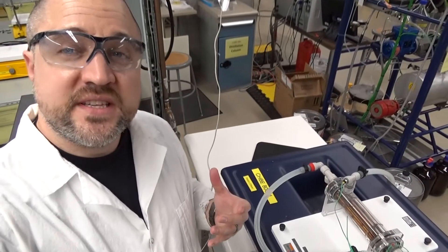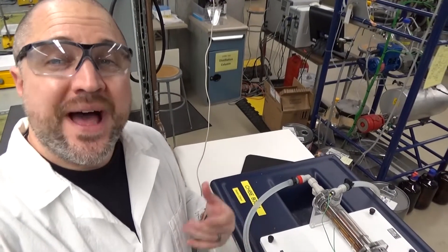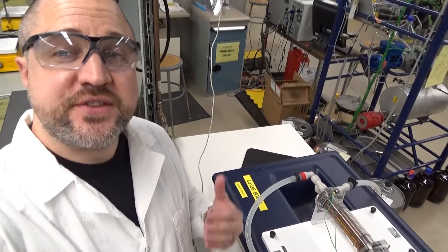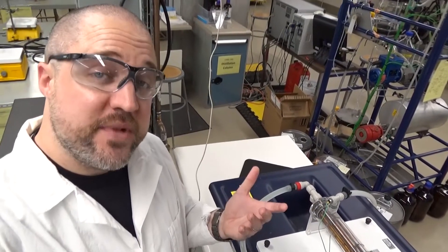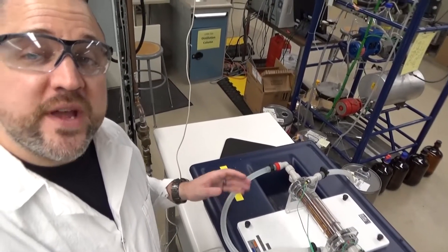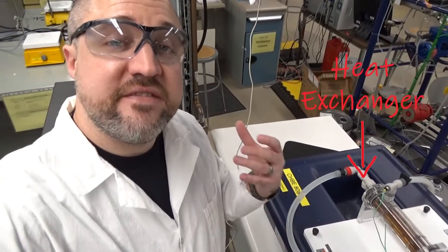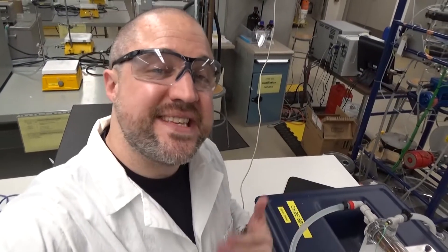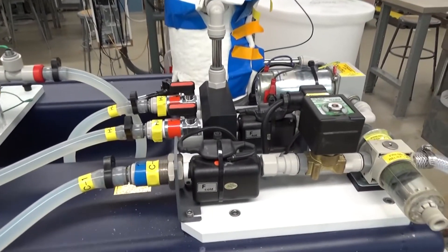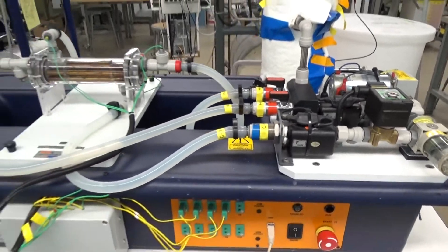We don't only study how matter behaves but also how energy behaves. Knowing how energy behaves allows us to design systems that are more economical but also more sustainable or environmentally friendly. What I have here is what we call a heat exchanger. This is a device that lets us take heat from one part of our process and recycle it to offset other energy costs in a different part of our process. So we use our knowledge of the behavior of energy to design better systems.